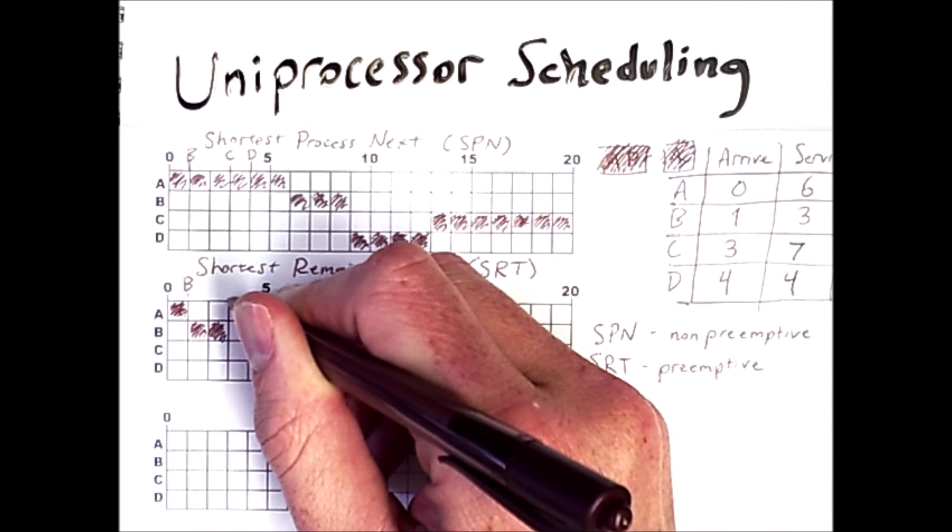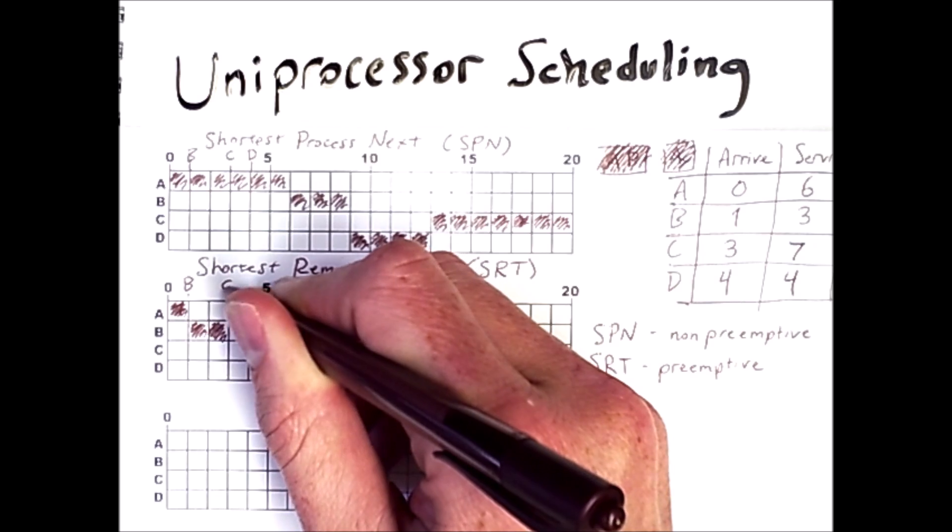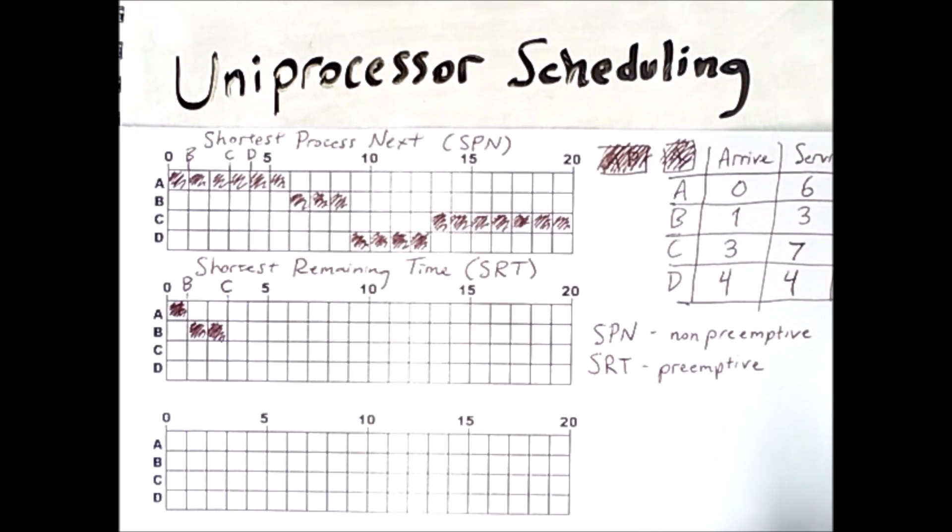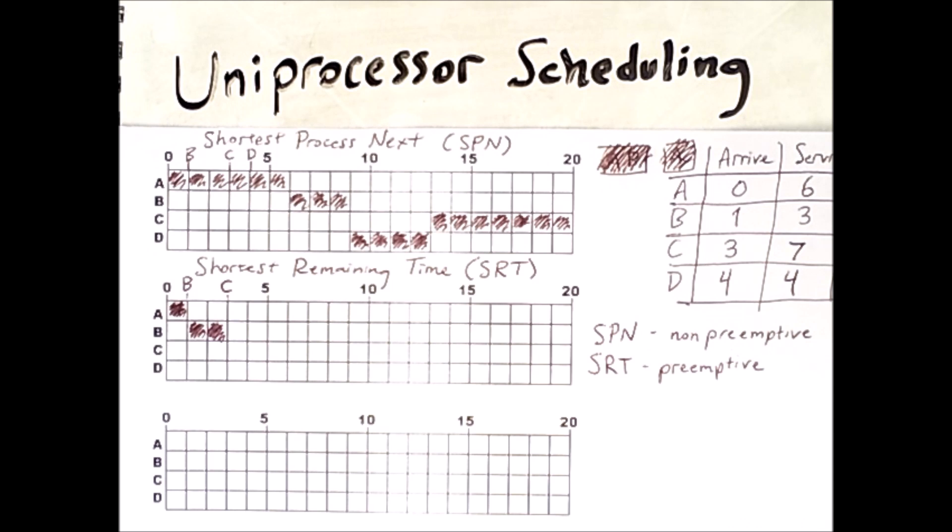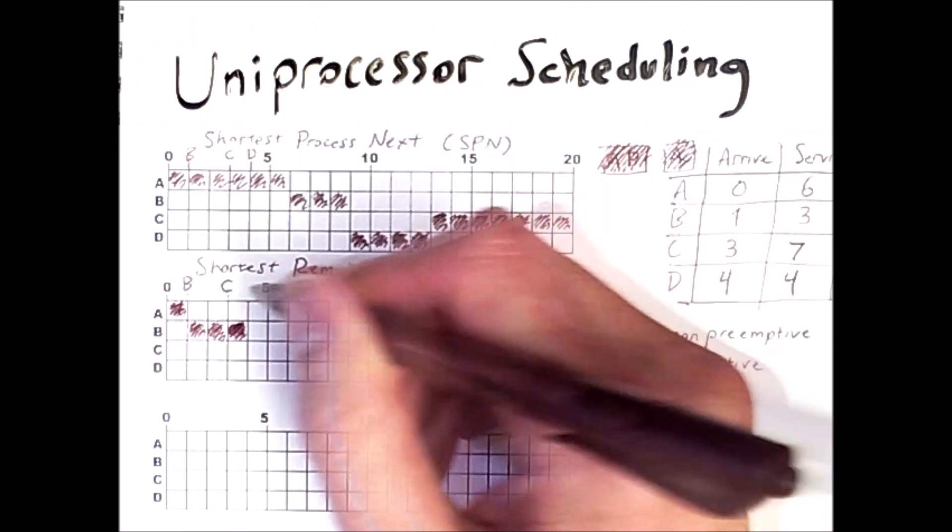Now when process C shows up at time three, we also reassess which process should be running. But because C has an overall service time of seven and B at this point only has one unit of time left to run, it gets to keep running, at which point D shows up.